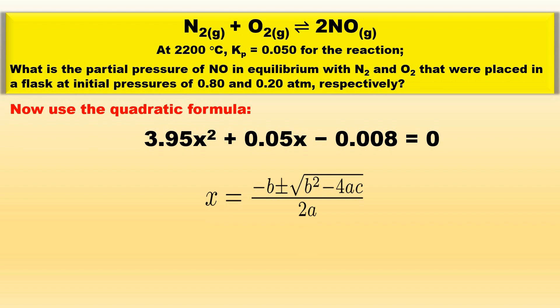Now use the quadratic formula to solve for x where x is equal to negative b plus or minus the square root of b squared minus 4ac divided by 2a. In this case a is equal to 3.95, b is equal to 0.05, and c is equal to negative 0.008.